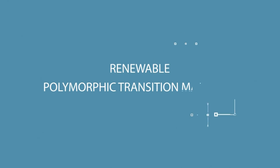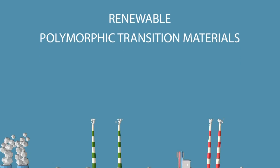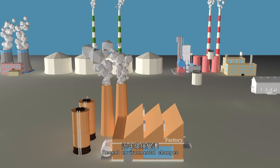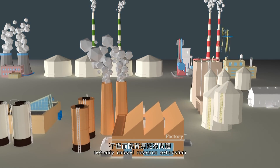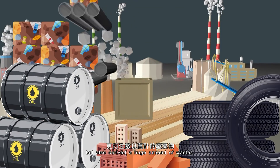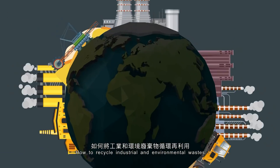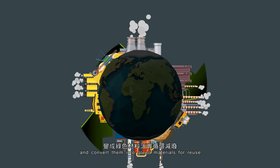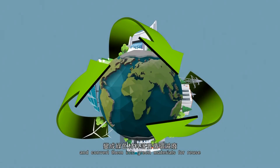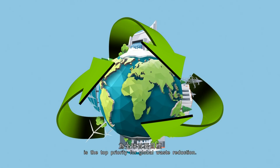Renewable Polymorphic Transition Materials. Recent environmental changes not only caused resource exhaustion, but also derived a huge amount of wastes. How to recycle industrial and environmental wastes and convert them into green materials for reuse is the top priority for global waste reduction.